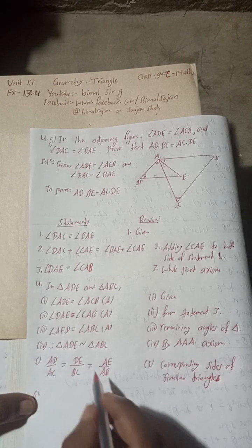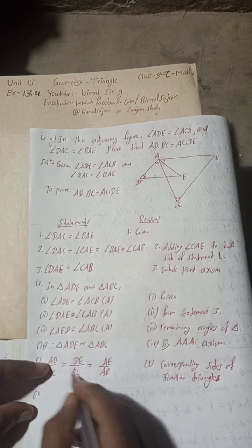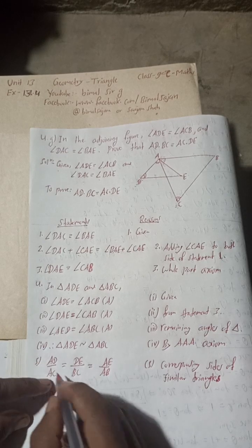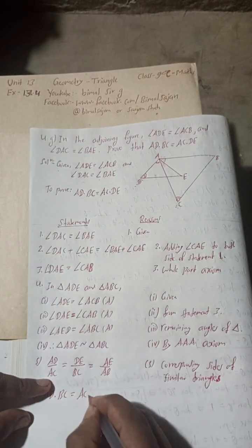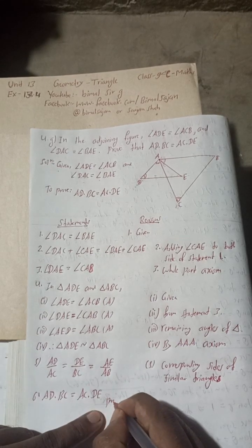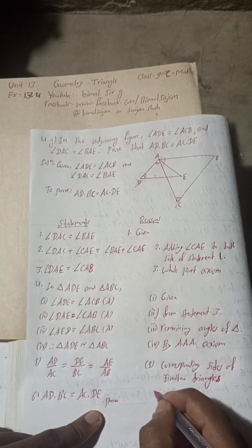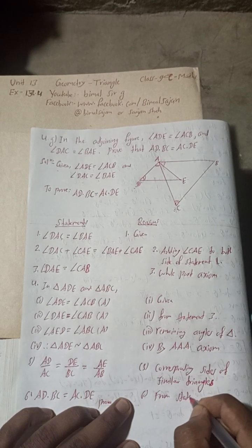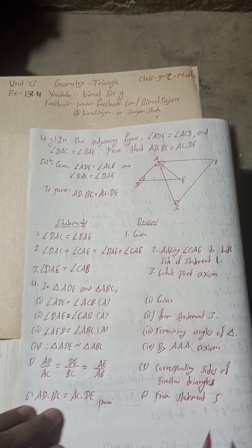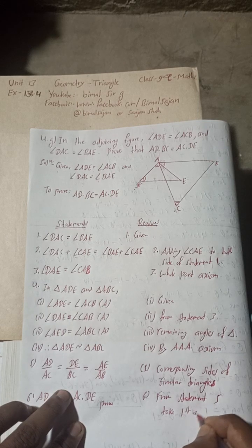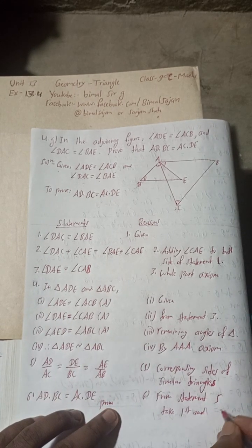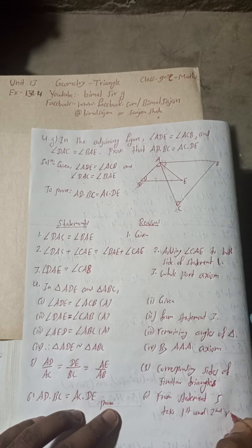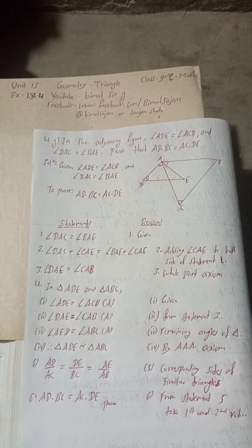Statement 6: From statement 5, taking the first and second ratios — AD over AC equals DE over BC — cross multiplying gives AD into BC equals AC into DE. This is proved. The reason is: from statement 5, taking the first and second ratio and cross multiplying.